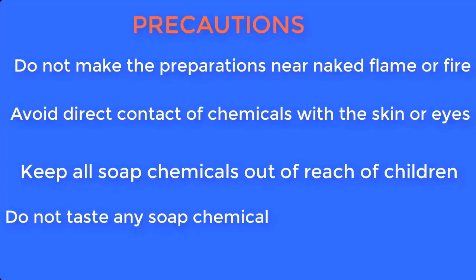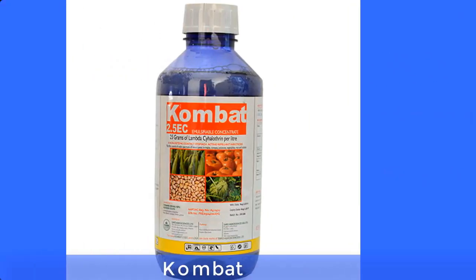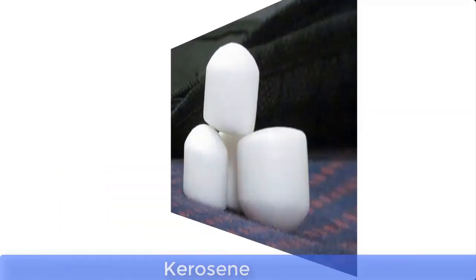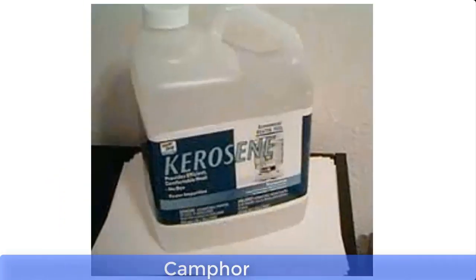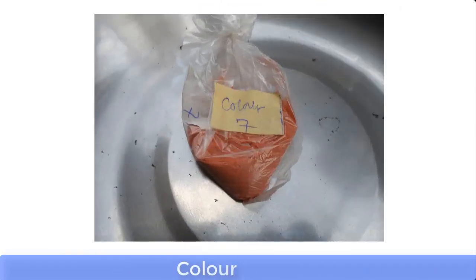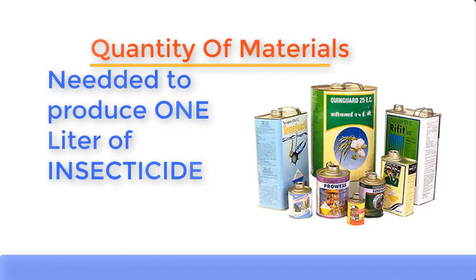Now let's go through the list of materials needed for this production. Number one is compact; number two is eucalyptus oil; number three is camphor; number four is kerosene; and number five is isopropyl alcohol, also known as IPA. Number six is color. Please note that the solvent used for this preparation is kerosene.